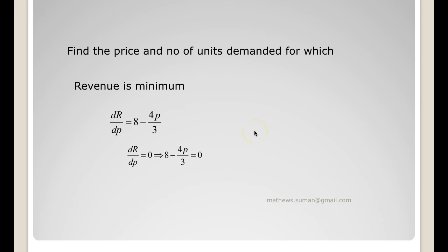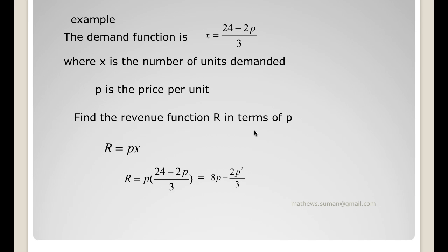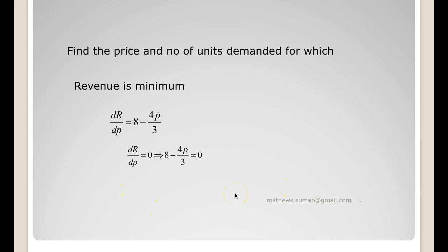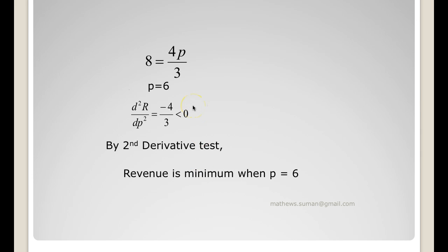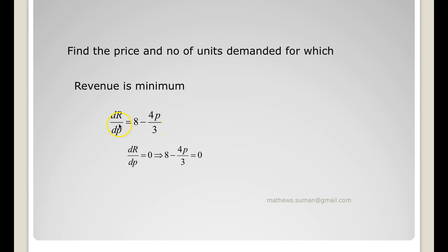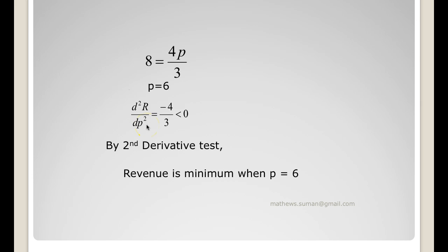Find the price and number of units demanded for which revenue is minimum. Now revenue is 8p minus 2p squared/3. To find the minimum revenue first we take the first order derivative of the revenue with respect to p. So differentiating this with respect to p I get 8 minus 4p/3. We equate the first order derivative to 0, so I get 8 minus 4p/3 is 0. So we get 8 equals 4p/3 or p equals 6. To find the second order derivative, we take the second order derivative of revenue, so that would be minus 4/3. This in any case is less than 0. So by second derivative test, revenue is minimum when p equals 6.